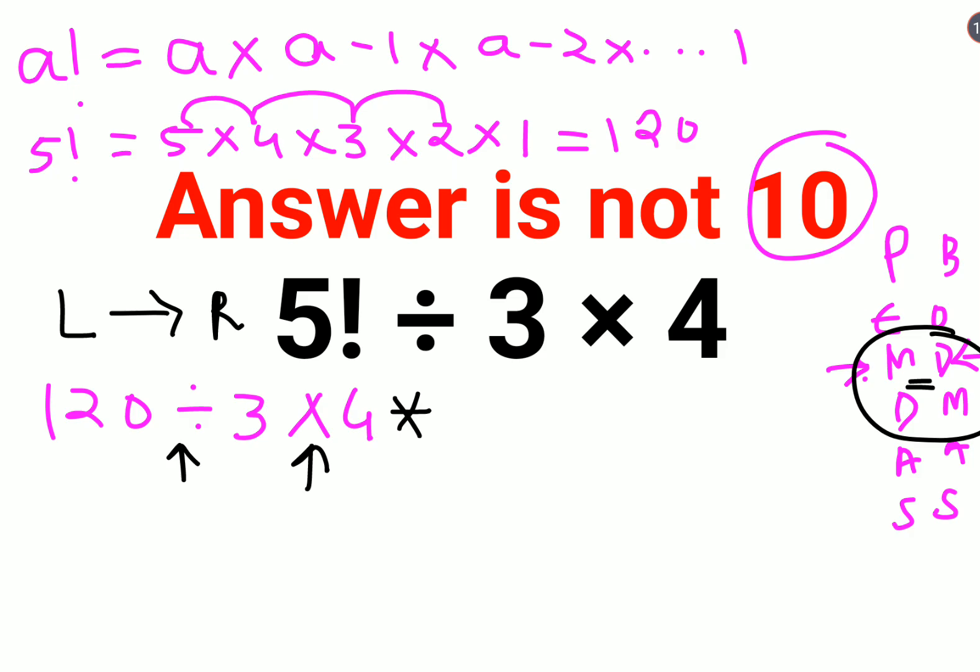So first you will do the operation which comes the first from your left hand side. So first we will do 120 divided by 3. That gets you 40.